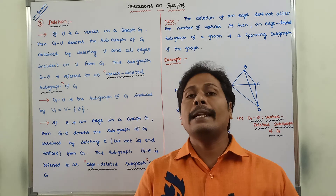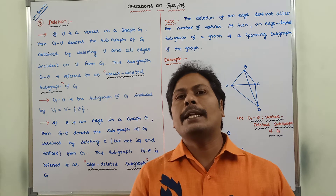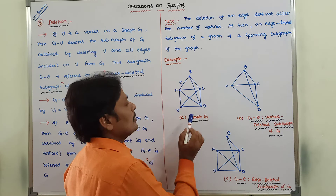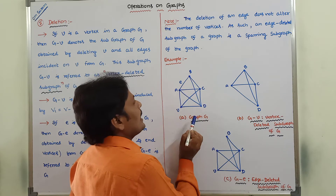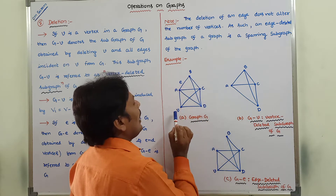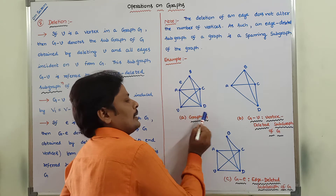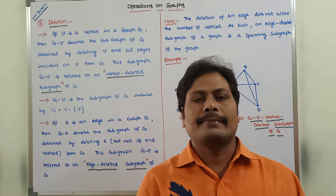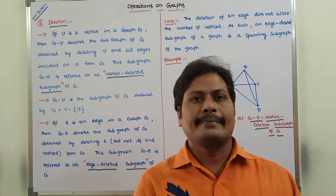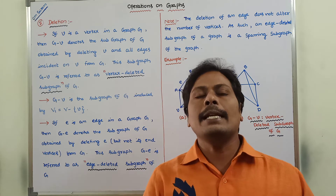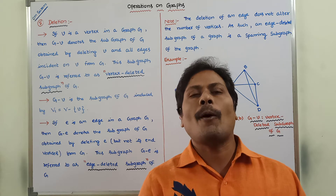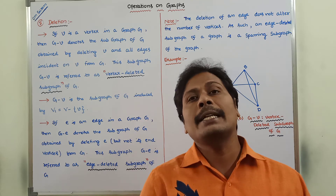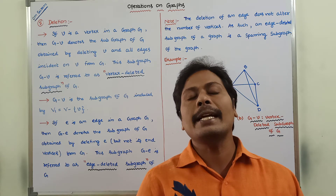The next operation is the deletion operation. How are we performing the deletion operation on a graph? There are two types: one is the vertex deleted subgraph, and the second one is the edge deleted subgraph of G.